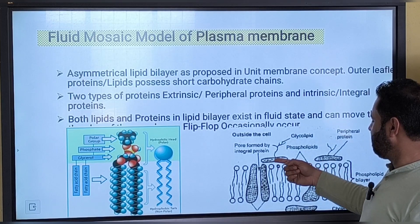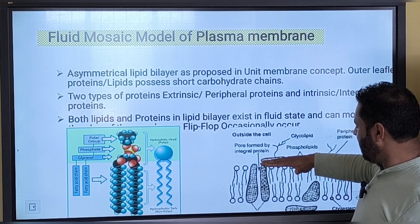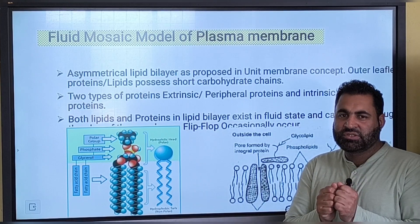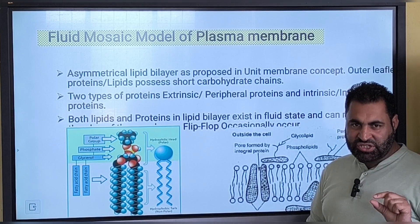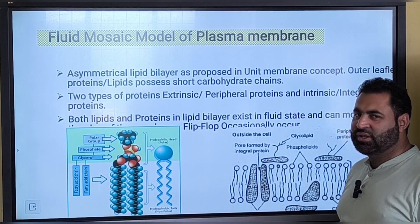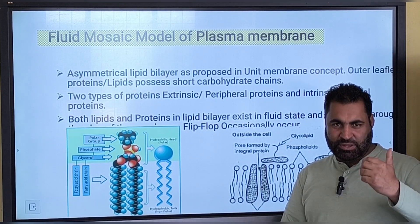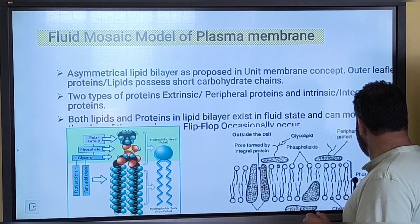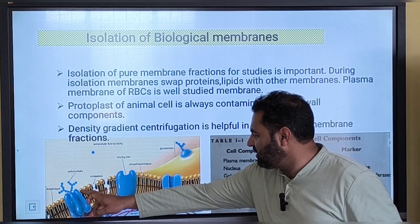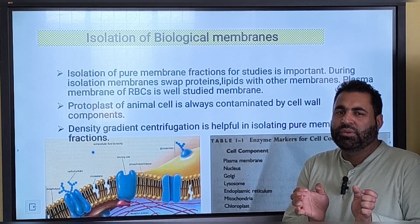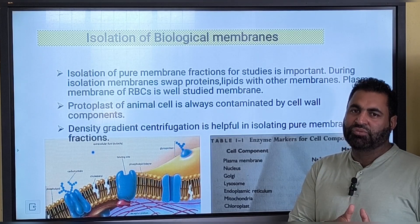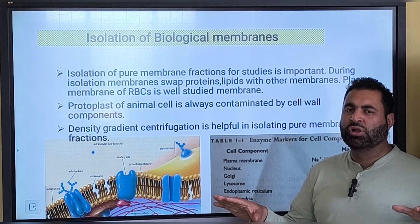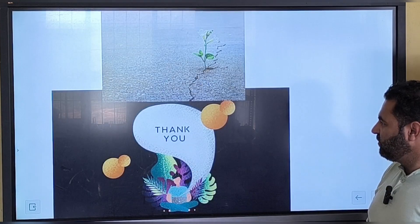Peripheral proteins present on the outer leaflet or the inner leaflet from the cytoplasmic side are attached by ionic interactions. We can dislodge them by increasing hydrogen ion concentration or by increasing the pH. While integral proteins — the proteins embedded inside the lipid bilayer or transmembrane proteins — cannot be dislodged that way because they are part and parcel of the plasma membrane. We can dislodge a membrane protein only if we use detergent, because detergent will destroy the whole plasma membrane. I hope you understood this lecture. We will continue further on plasma membranes. Thank you so much.